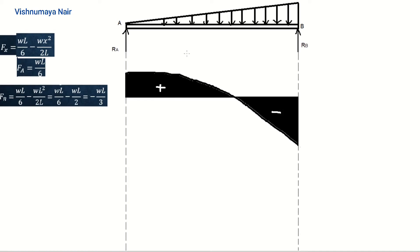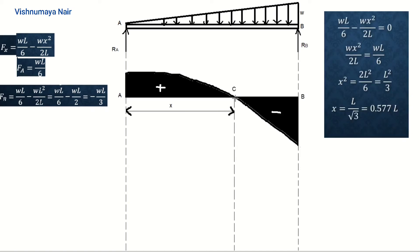This is the shear force diagram of a simply supported beam with a uniformly varying load. At point C the shear force equals 0. Let this point C be at a distance of x meters from end A. At a section at distance x, shear force equals WL/6 minus WX²/2L. Setting this to 0: WX²/2L equals WL/6, so X² equals L²/3. Therefore, X equals L/√3, which equals 0.577 times L. This distance is 0.577 times the total length of the beam from end A.